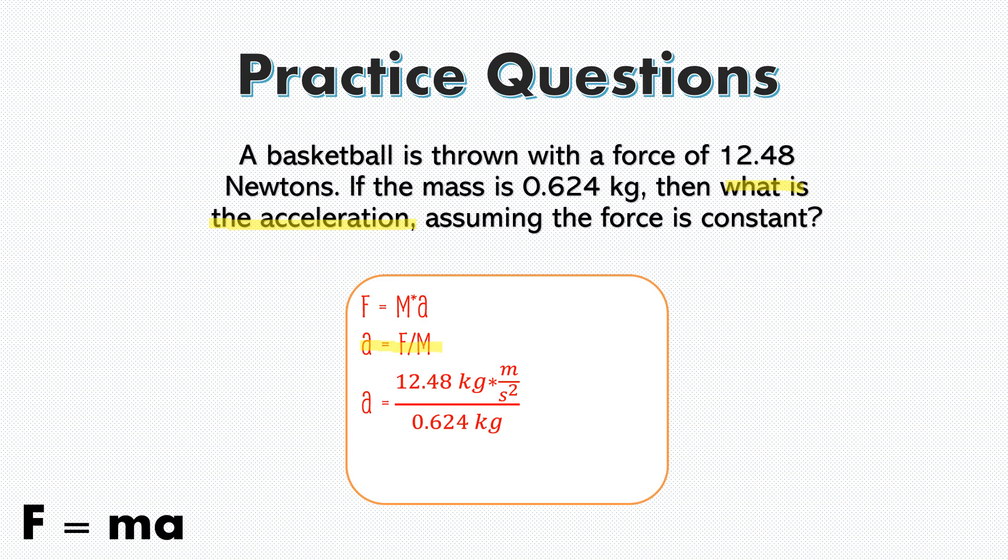Now we're going to substitute our variables. And the force is 12.48 newtons. And the mass is 0.624 kilograms. And we know that newtons is equal to kilograms times meter per second squared. So on the bottom, we have our mass also in kilograms. So what we can do here is we can cancel out kilograms, which is just going to leave us meters per second squared. And 12.48 divided by 0.624 is going to equal 20. So our acceleration is equal to 20 meters per second squared.